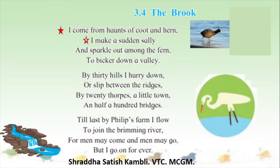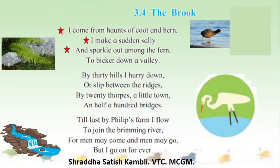'I make a sudden sally and sparkle out among the ferns.' Ferns are a kind of grass. 'To bicker down a valley.' So I come flowing, I take turns, I go through the fern, I flow where there are birds and then I go down a valley. Next line: 'By thirty hills I hurry down or slip between the ridges.' Ridges are narrow parts along the mountains. The brook crosses so many different hills and also comes between the ridges.